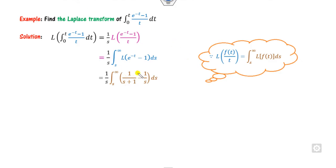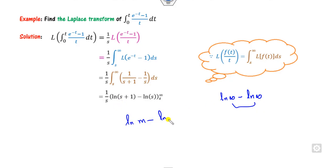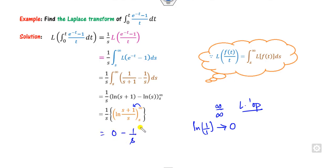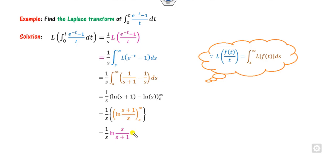What is the integration of 1/s? It is ln(s). When you apply the limit at infinity, ln(infinity) is undefined. So write ln(m) minus ln(n) as ln(m/n). When you take infinity it is infinity over infinity, so apply L'Hôpital's rule — it gives ln(1/1) = ln(1) = 0. So at infinity the result is 0, and at s the result is ln((s+1)/s). Adjusting the negative sign by inverting the ratio gives the final answer.